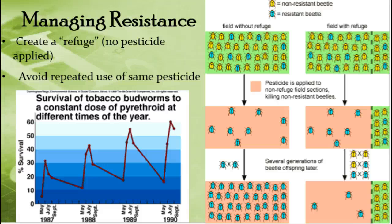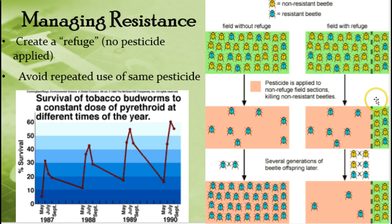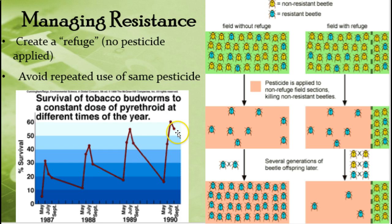There are ways to manage pesticide resistance. One is to create a refuge area in the ecosystem — part of your farm where you don't apply pesticides — allowing the population of non-resistant pests to stay fairly level with resistant ones, so you're still killing the majority. The other way is to avoid repeating the exact same pesticide and instead alternate which type you use, because using the same one will result in killing fewer and fewer organisms over time.